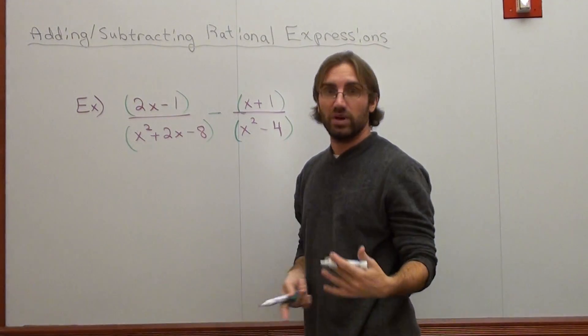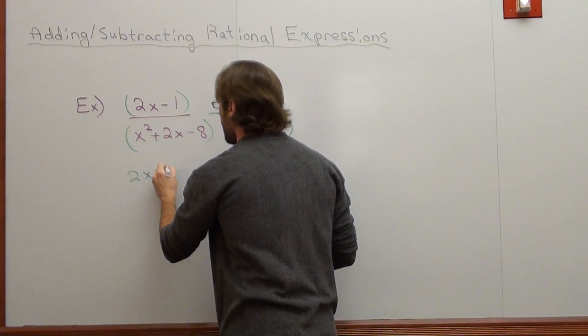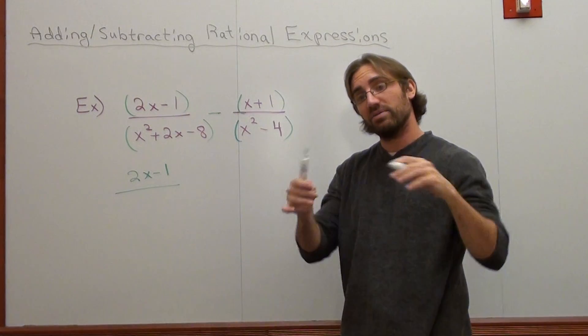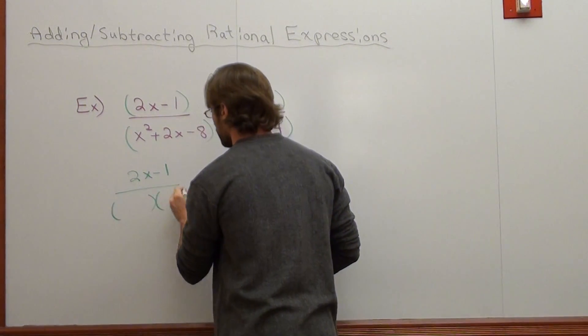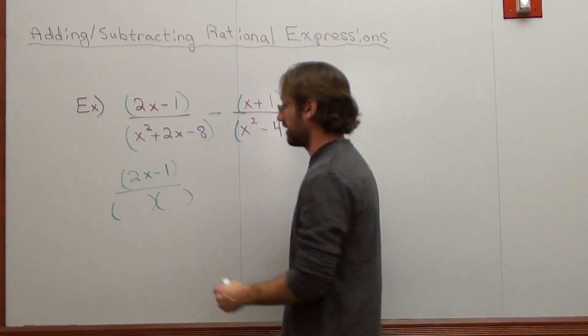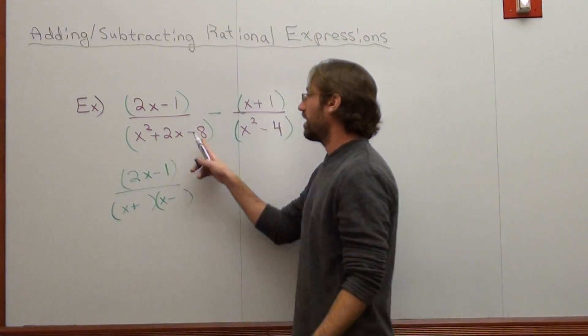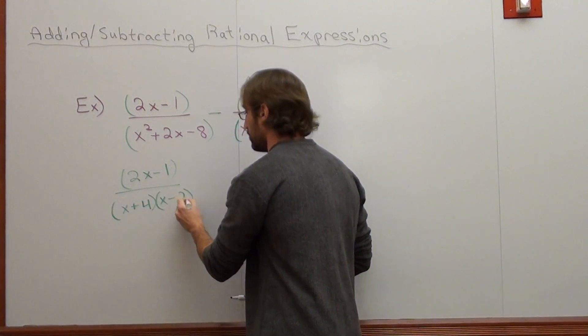I can't do anything with 2x minus 1. I can't take out a GCF, so I'm done. I can't take out a GCF from the denominator in the first fraction, but I can factor it into two binomials. x times x is x squared. And what multiplies to negative 8 but adds up to positive 2? That's 4 and 2.